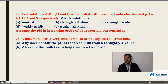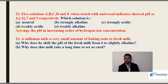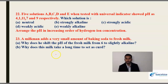Next: Five solutions A, B, C, D, and E when tested with universal indicator showed pH values of 4, 1, 11, 7, and 9 respectively. Identify which solution is neutral, strongly alkaline, strongly acidic, weakly acidic, and weakly alkaline, and arrange the pH in increasing order of hydrogen ion concentration. Also: A milkman adds a very small amount of baking soda to fresh milk — why does he shift the pH of fresh milk from 6 to slightly alkaline, and why does this milk take a longer time to curdle?